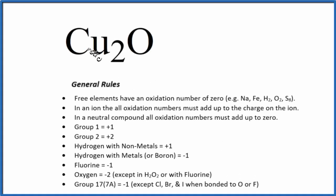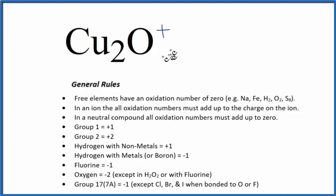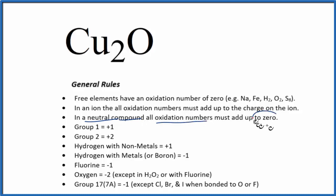To find the oxidation numbers for each element in Cu2O — this is copper oxide — we'll use these general rules here. The first thing you'll notice, there's no negative or positive charge after the Cu2O. That means it's a neutral compound, and all the oxidation numbers are going to add up to zero. That's an important rule to remember.